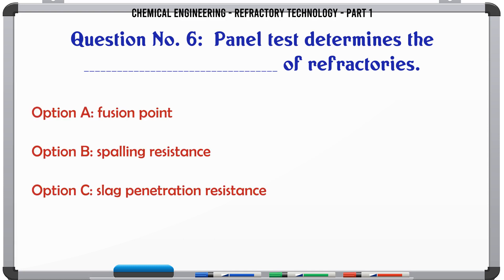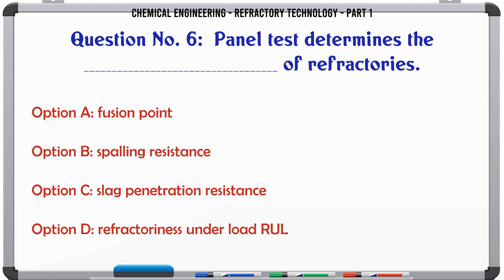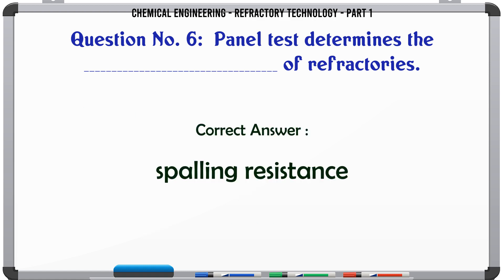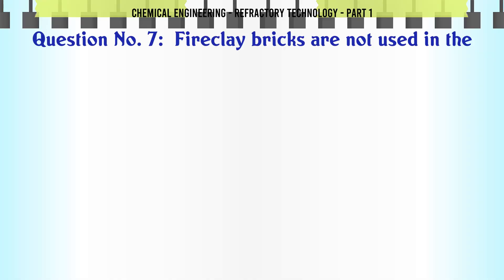Panel test determines the ___ of refractories. A. Fusion point, B. Spalling resistance, C. Slag penetration resistance, D. Refractoriness under load (RUL). The correct answer is Spalling resistance.